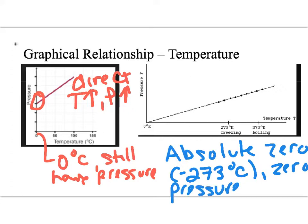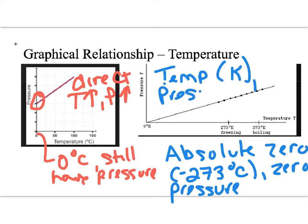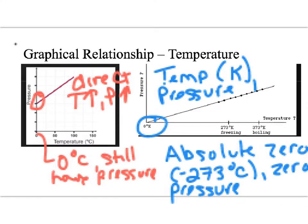At absolute zero, particles stop moving, and therefore you have zero pressure. So when we're talking about temperature in this relationship, we're talking about temperature on the Kelvin scale. When you're working with the relationship between temperature and pressure, you have to convert to Kelvin, because at zero degrees Kelvin you have zero pressure.